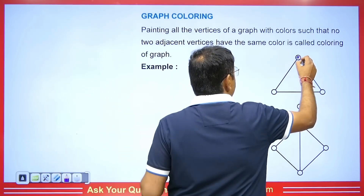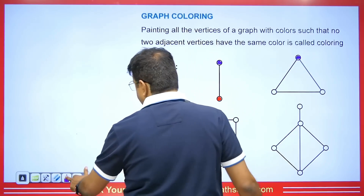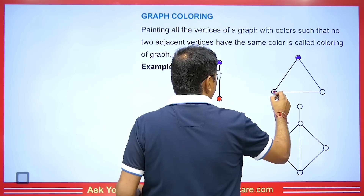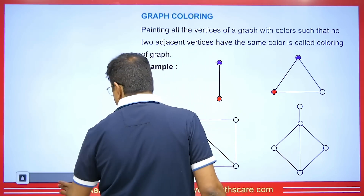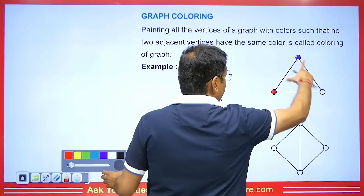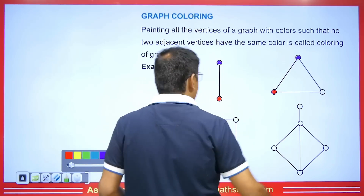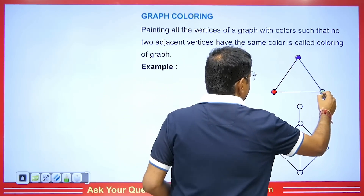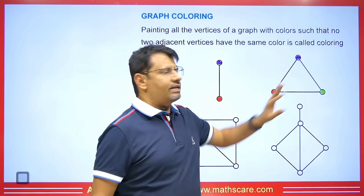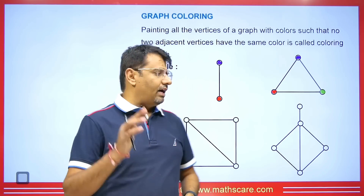Since this edge connects here and also connects here, I will use a different color for this vertex. I've already chosen red for one vertex, and it's connected to both other vertices, so I will need to select a different color. In a complete graph with three vertices which are all connected to each other, we will need to use three different colors.